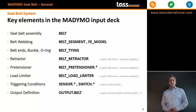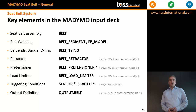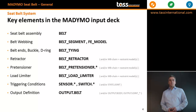Next, we look at the key elements used for Madimo seatbelt modeling. First, there is the Madimo element belt, which is the container element for all other belt elements. For the belt webbing, we use belt segment or FE model for an FE belt segment. Belt ends, buckle, or D-ring are modeled with belt tying. Retractors are modeled with belt retractor, pretensioner with belt pretensioner, and load limiter with belt load limiter. Triggering conditions can be defined with sensor and switch elements, and output such as belt forces or belt pullout or pull-in can be defined with output.belt.